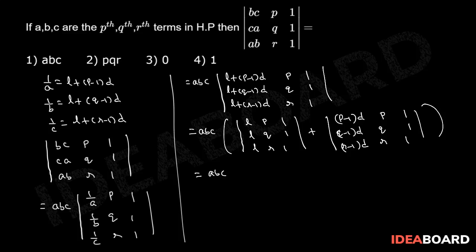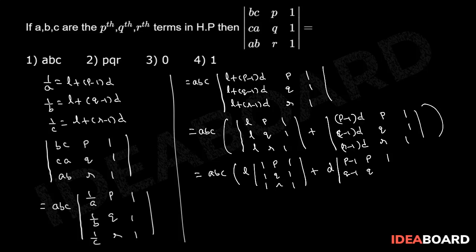This equals ABC into: taking L as common from the first column, we get L into the determinant of [1, P, 1; 1, Q, 1; 1, R, 1], plus taking D as common from the first column, we get D into the determinant of [P−1, P, 1; Q−1, Q, 1; R−1, R, 1].